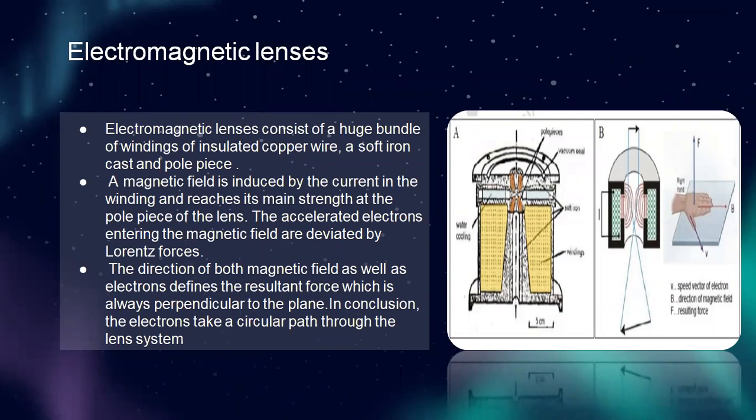Next, electromagnetic lenses: electromagnetic lenses consist of a large bundle of windings of insulated copper wire, a soft iron core and pole piece. A magnetic field is induced by the current in the windings and reaches its main strength at the pole piece of the lens. The accelerated electrons entering the magnetic field are deviated by Lorentz forces. The direction of both magnetic field and electrons defines a force which is always perpendicular to the plane. In conclusion, the electrons take a circular path through the lens system.